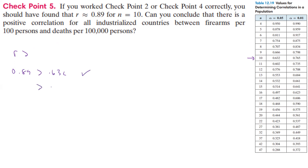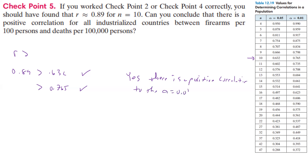Is r greater than the table value? Well, r equals 0.89 — is that greater than 0.632? Yes. Is it greater than 0.765? Yes. So we can say there is a positive correlation to the alpha equals 0.01 level. We are well past the 0.05 level and we still beat the 0.01 level, so yes, there is a positive correlation at the alpha equals 0.01 level.